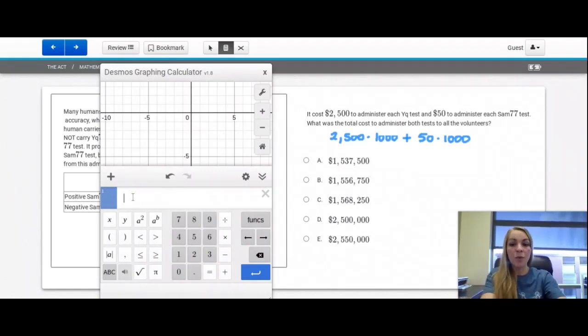I can multiply these two things together or come right up here to my Desmos calculator. Typing this in really quick. 2,500 times a thousand plus 50 times 1000 gives me the answer of 2,550,000, and that's answer E.